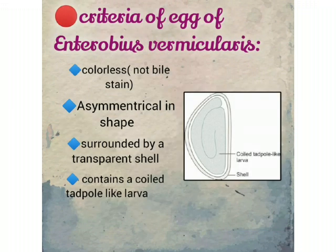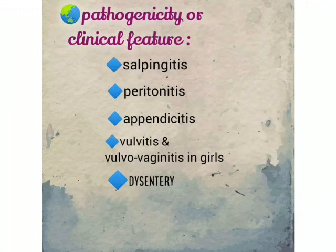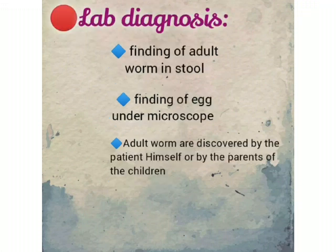Characteristics of the egg: they are colorless, asymmetrical in shape, surrounded by a transparent cell, and contain a coiled tadpole-like larva. Pathogenicity or clinical features include salpingitis, peritonitis, appendicitis, vulvitis or vulvovaginitis, and dysentery. Laboratory diagnosis: finding of adult form in stool, finding of eggs under microscope. Adult forms are often discovered by the patient or by the parents of children. Thank you.